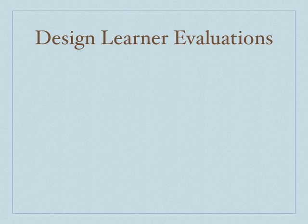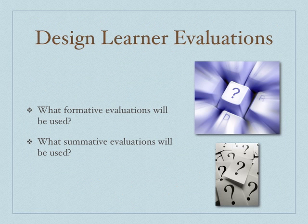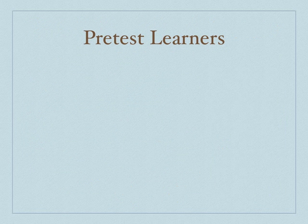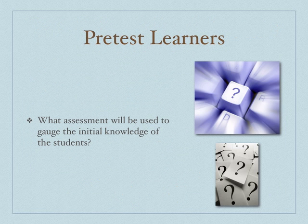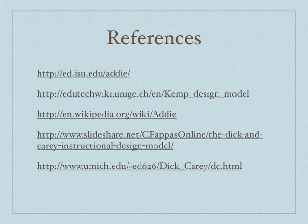Design learner evaluations: what formative evaluations will be used and what summative evaluations will be used? You'll do all your evaluations in one combined step in the Kemp model. Pre-testing the learners is fairly important and allows you to gauge the initial knowledge of the students — what assessment will you use to gauge that initial knowledge? Remember, at the end of the Kemp model, you need to conduct your evaluations and then revise your instruction. If you want to learn more about any of these models, the references used to develop this presentation are listed. If you have any questions, please get in touch.